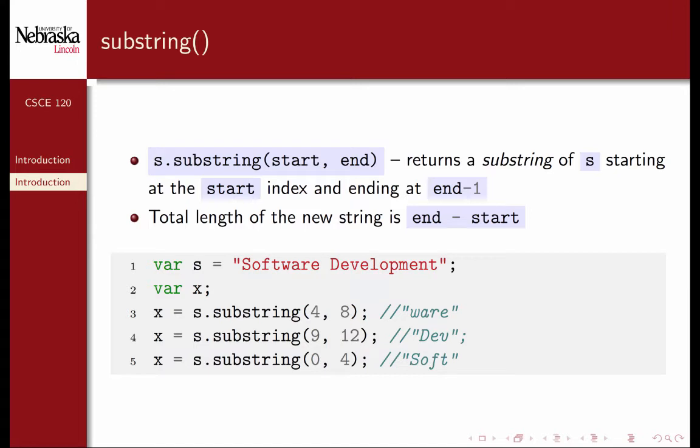The other version is substring. It also takes a start index, at which you want to start taking a substring. But instead of taking a length, it takes an ending index. It'll return a substring of s starting at the start index, and ending with the end index minus 1. This is so that the total length of the new string is actually end minus start.